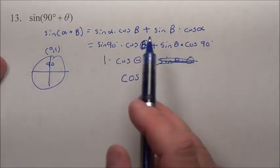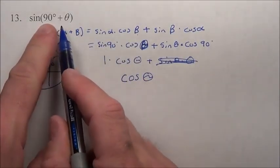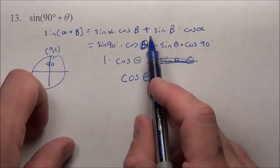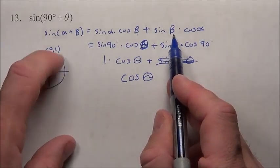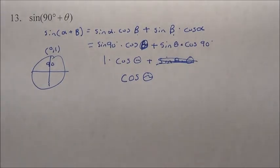We follow what this is. Instead of alpha and beta, just say sine of the first piece times cosine of the second. There's your first piece. There's your second. Plus sine of the second, sine of the theta, times cosine of the first piece. Cosine of 90. Just fill it in.